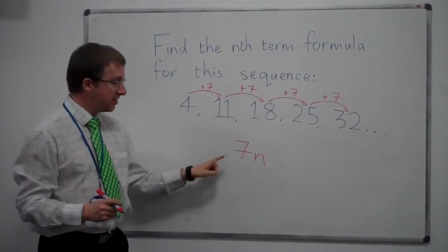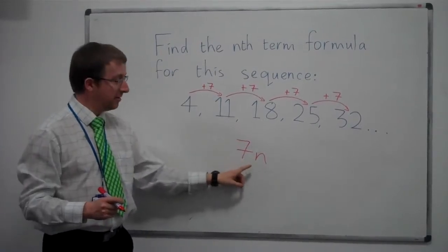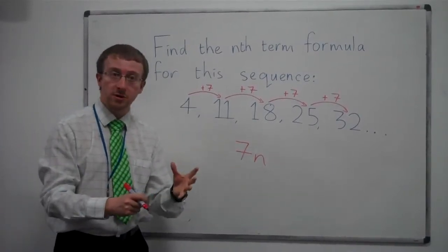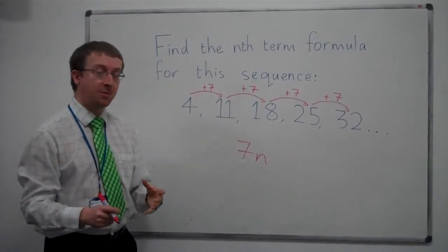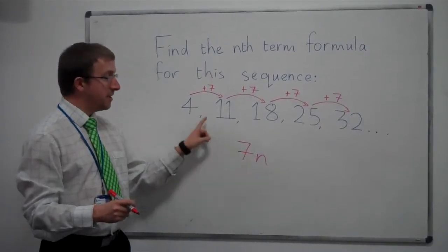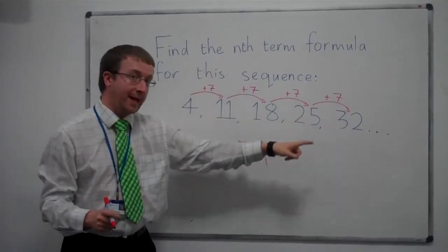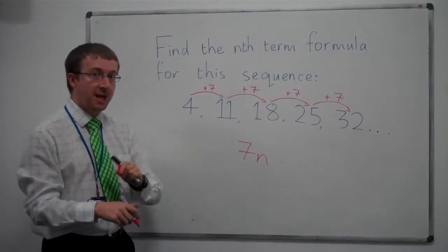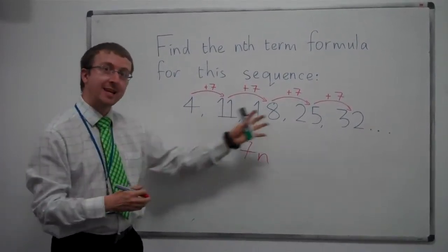Now at this stage, this 7n is kind of a maths code for the 7 times table. So what that means is, this sequence really should be the 7 times table. But it's obviously not.